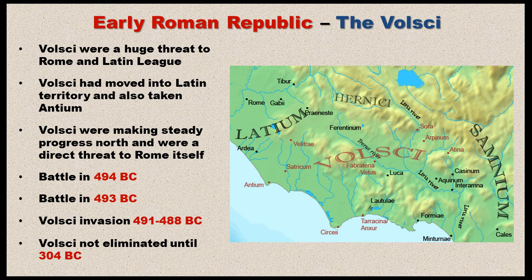From that point on, the Volsci were pretty much contained by the Romans. They were not eliminated, though, until about two centuries later in 304 BC, during the Third Samnite War, which will be the topic of discussion in a few videos from now.